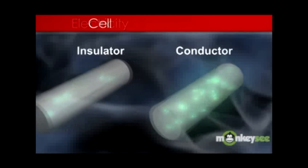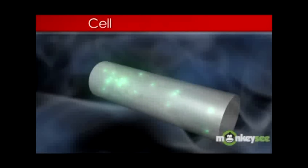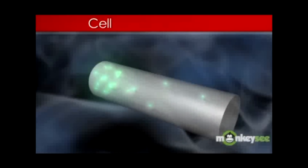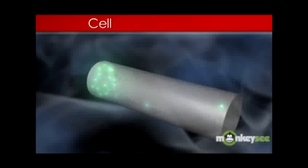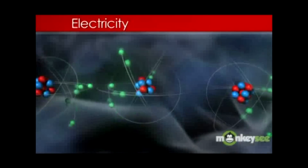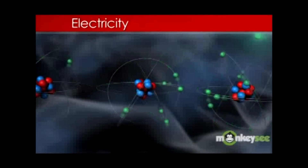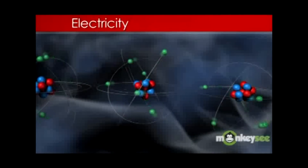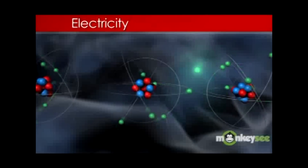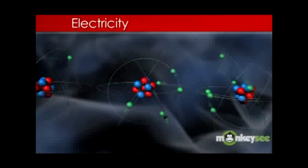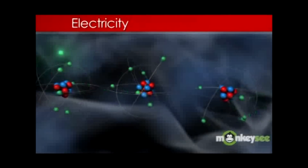When a large number of free electrons pile up at one end of a conductor, particles that have the same charge repel each other, while particles that have opposite charges attract. These negative electrons push each other apart, jumping from atom to atom through the conductor, creating electricity. There are two forms of electricity: current and static.